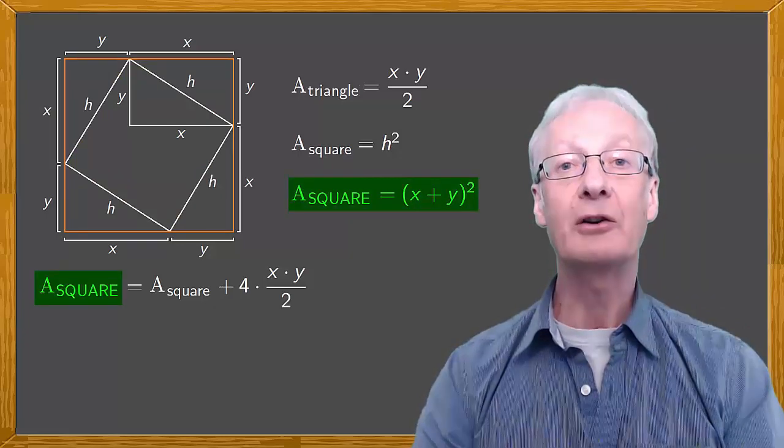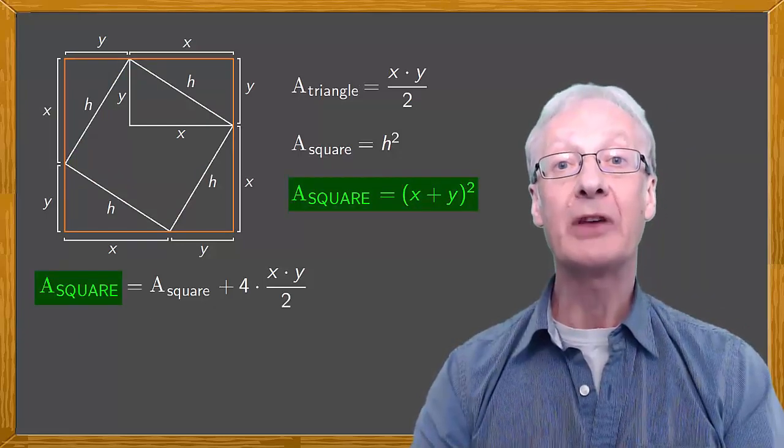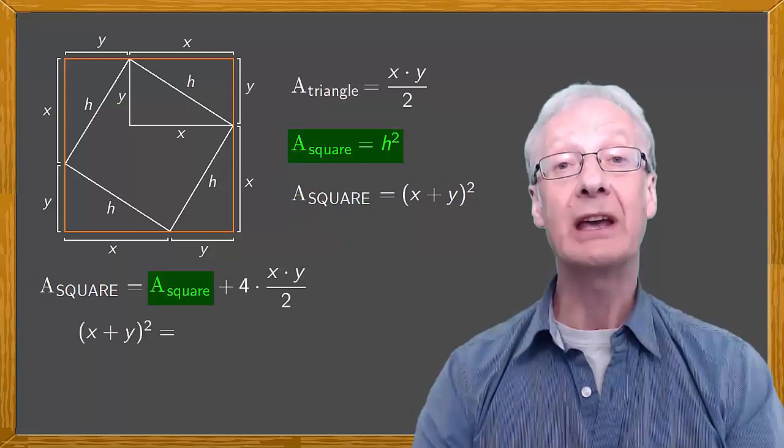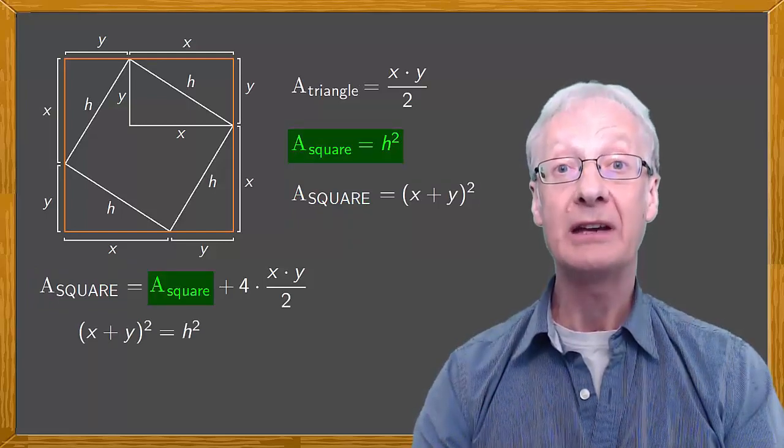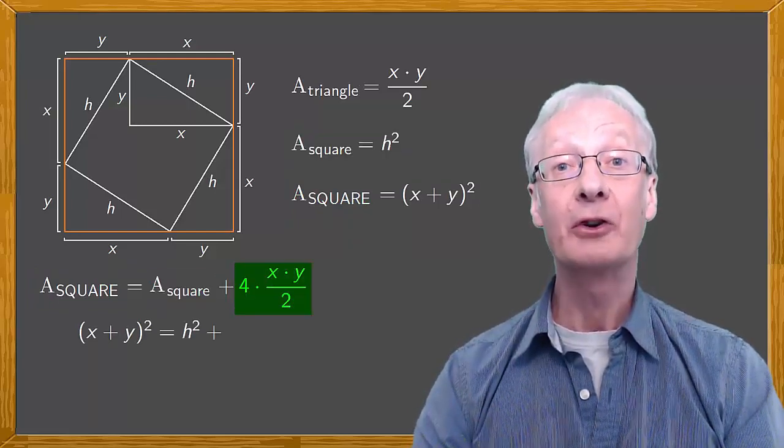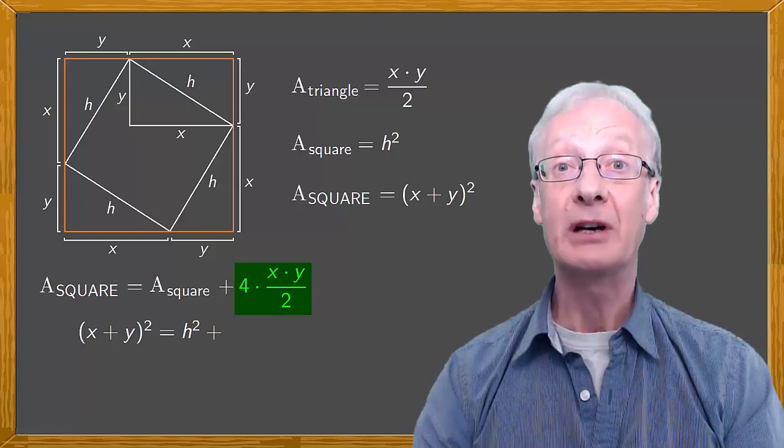Substituting, the area of the big square is x plus y squared, and is equal to the area of the small square, h squared, plus 4 times x times y divided by 2, or 2 times x times y.